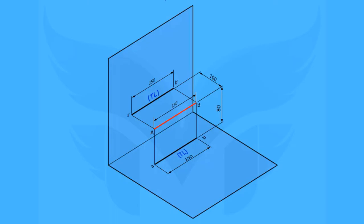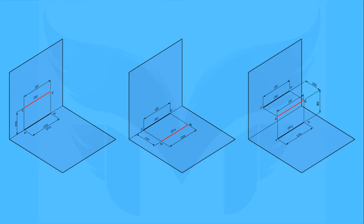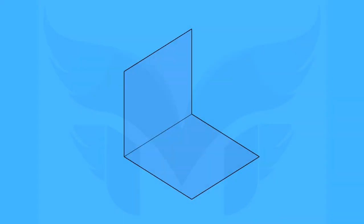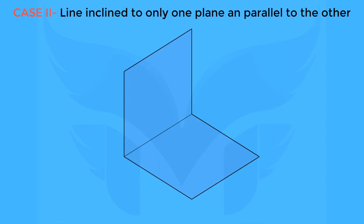In all previous cases, the common thing was that line AB was parallel to both the planes, and hence we can see the true length of the line in both front view and top view. So here we have finished with Case 1. Now let's move on to the second case in which our line will be inclined to one of the planes and parallel to the other.